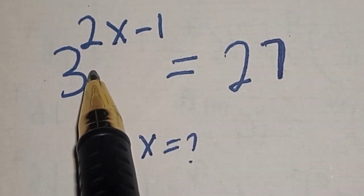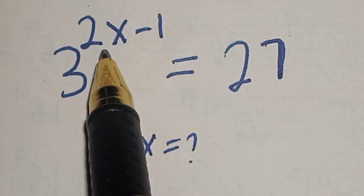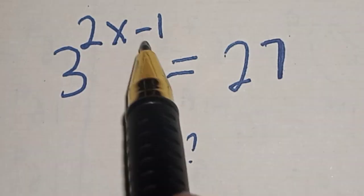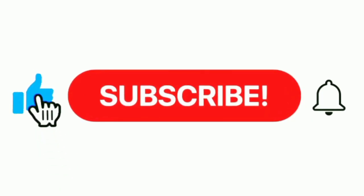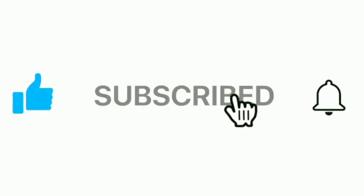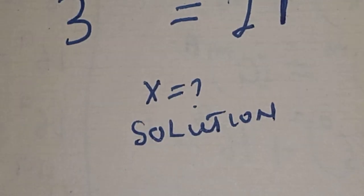Hello, welcome to Math Gist. In this class we want to find the value of s from this equation: 3 raised to power 2s minus 1 is equal to 27. Like, share, comment, and subscribe. Solution: the given question is 3 raised to power 2s minus 1 equals 27.